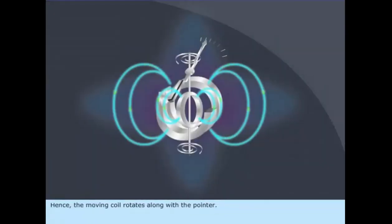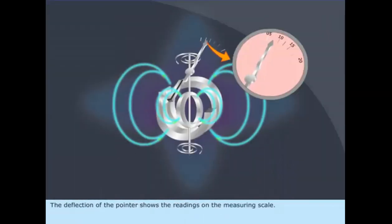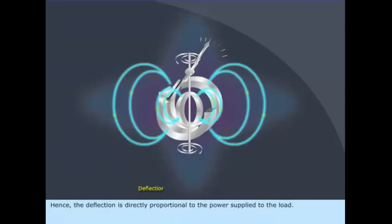Hence, the moving coil rotates along with the pointer. The deflection of the pointer shows the readings on the measuring scale. The deflection is directly proportional to the power supplied to the load.